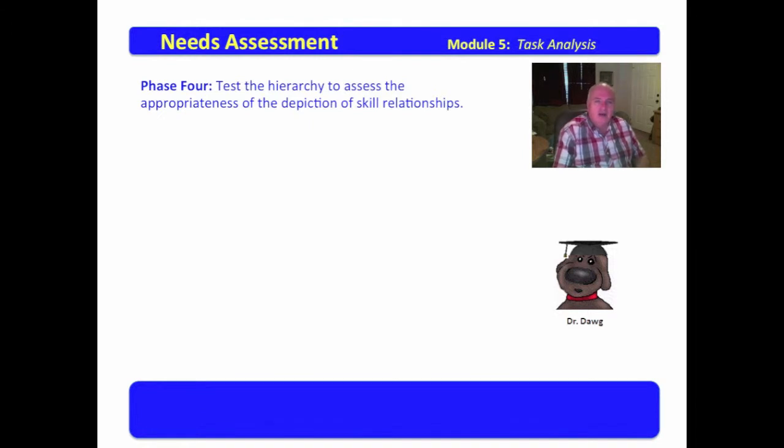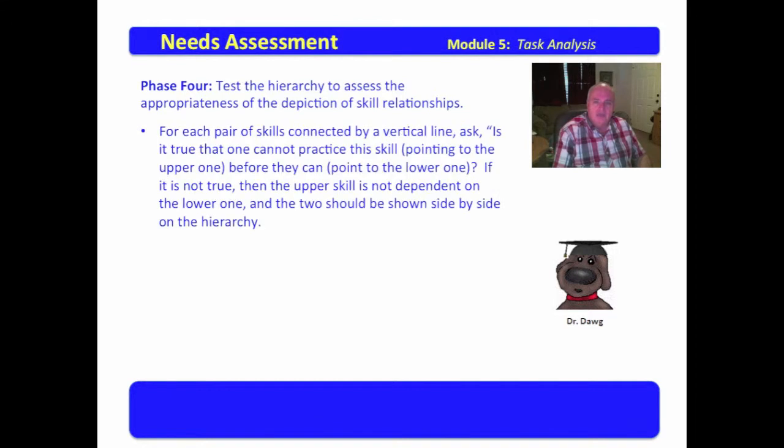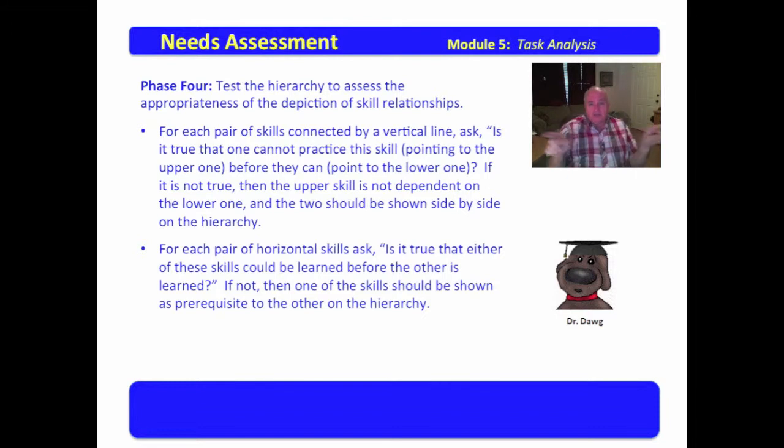Now, phase four, you test the hierarchy to assess the appropriateness of the depiction of the skill relationships. For each pair of skills connected by a vertical line, is it true that one cannot practice this skill pointing to the upper one before they can point to the lower one? In other words, you have to know this one before you can do this one. If it is not true, then the upper skill is not dependent on the lower one, and the two should be sewn side by side on the hierarchy. The issue is, what order must they be done in? Must this one be known before you can do this one, or are they really equivalent?